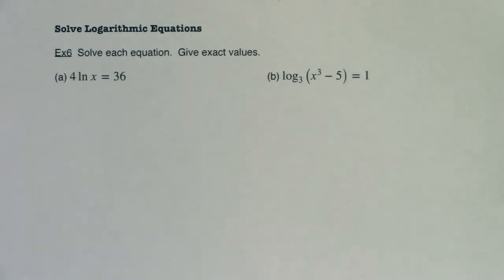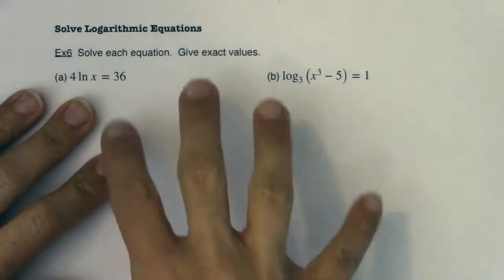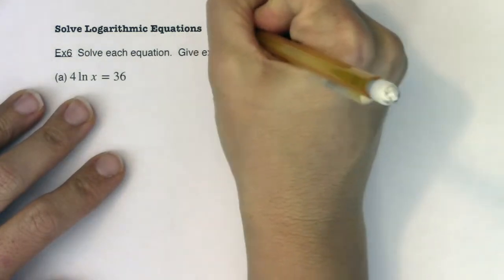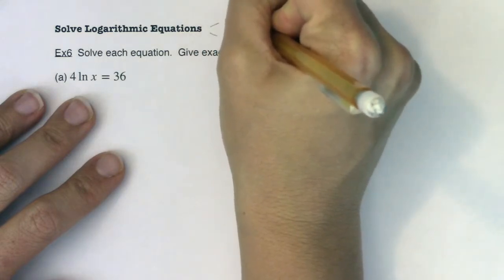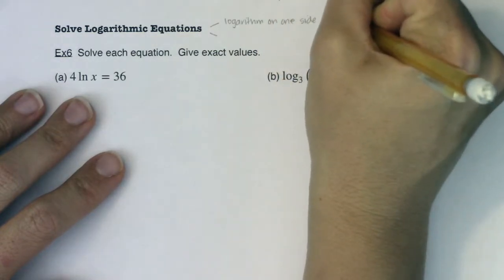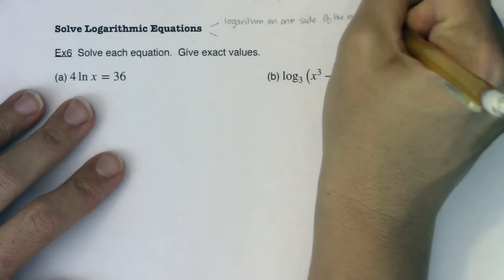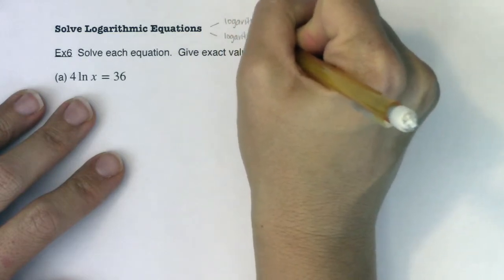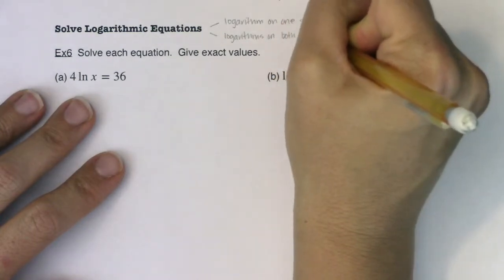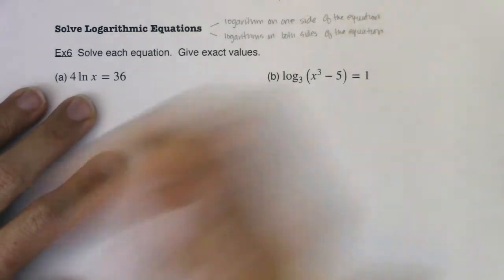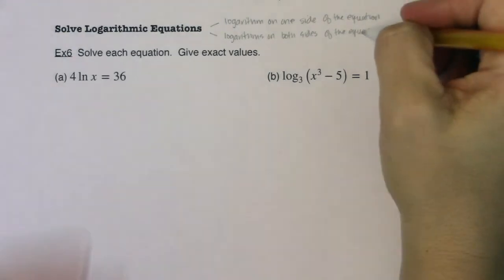Hey Math 31, welcome to example six. This is going to be the first time that we're going to solve a logarithmic equation together. I want to talk about the two different types of logarithmic equations you're going to get. You're going to get equations where there's a logarithm on one side, and then equations where there are logarithms on both sides of the equation.